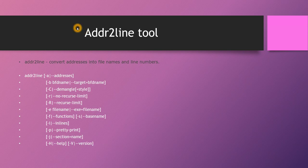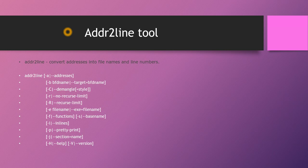To summarize: addr2line is a tool used to get the file name and line number from tombstone log addresses. The addr2line tool is used on Linux and build machines. I tried and researched how to use it on Windows but there is no straightforward way to use addr2line on a Windows machine.